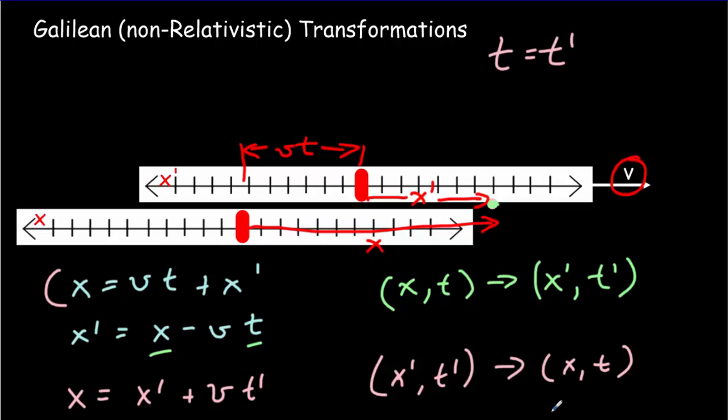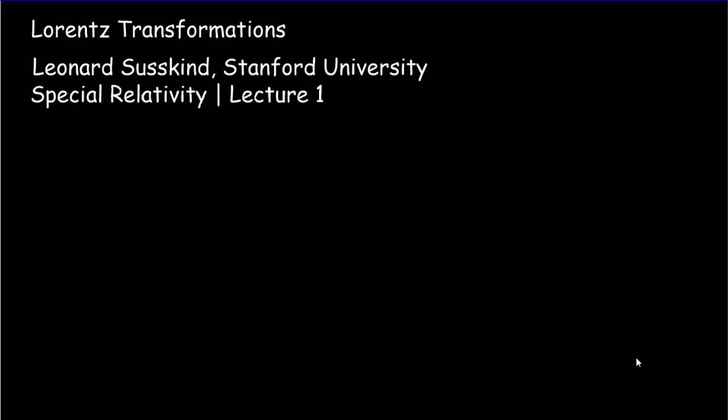We can take any point and express it in terms of the moving reference frame coordinates or the non-moving reference frame coordinates. Now, if we want the equivalent relativistic transformations — we call these the Lorentz transformations — the main thing we must account for is that both reference frames must measure the same speed for the speed of light, and we would have to get the right amount of length contraction and time dilation.